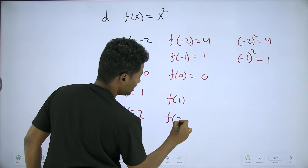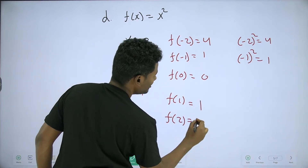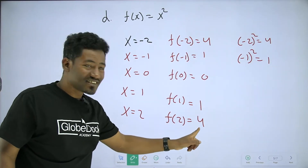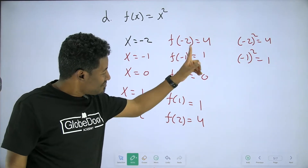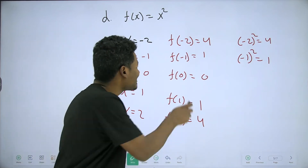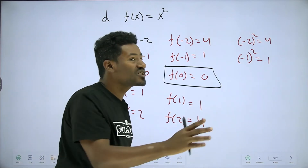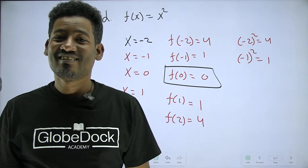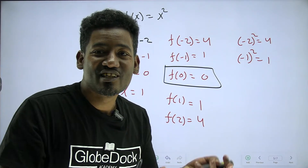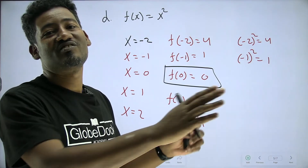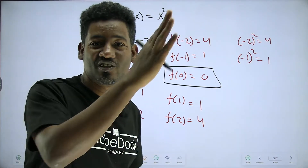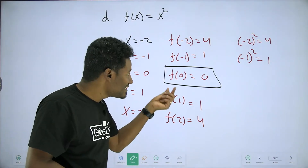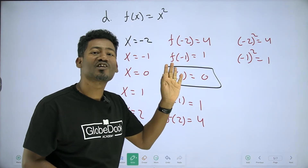f of one, f of two — gives one and four. The output is always a positive number. f of zero is zero.